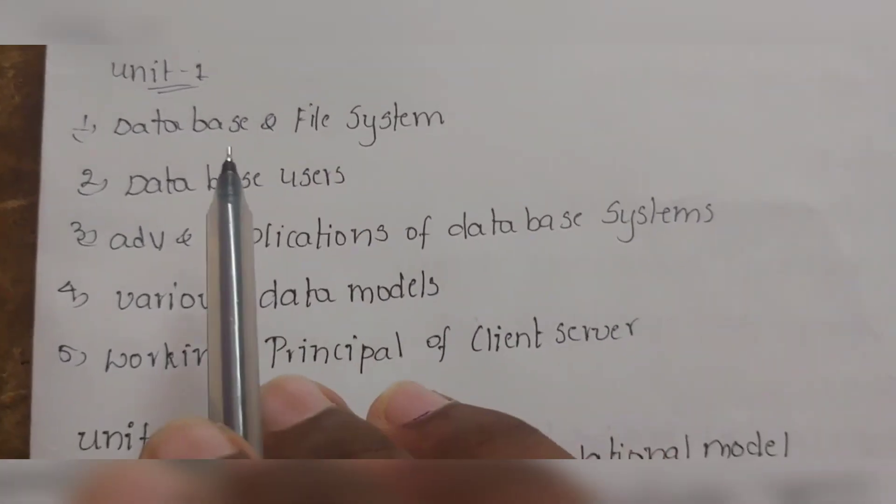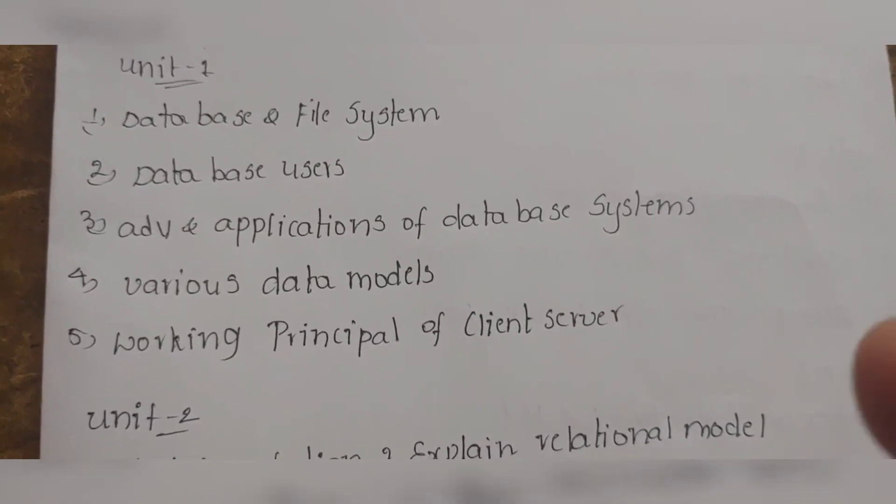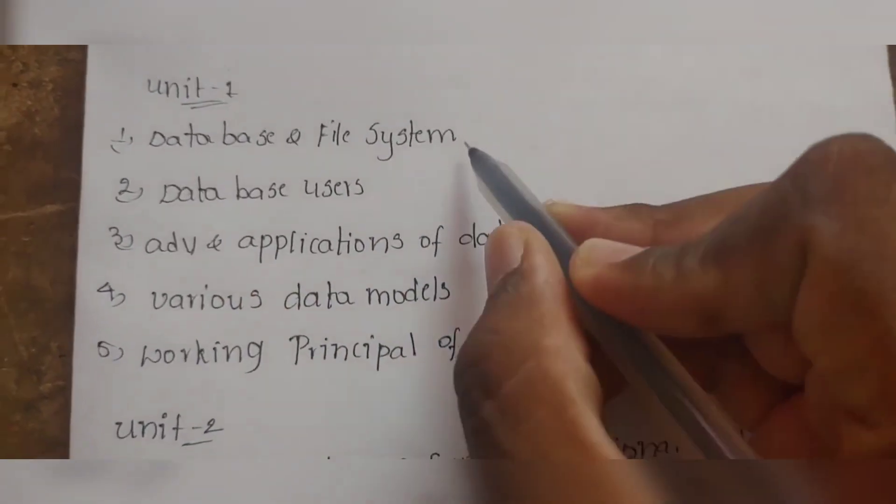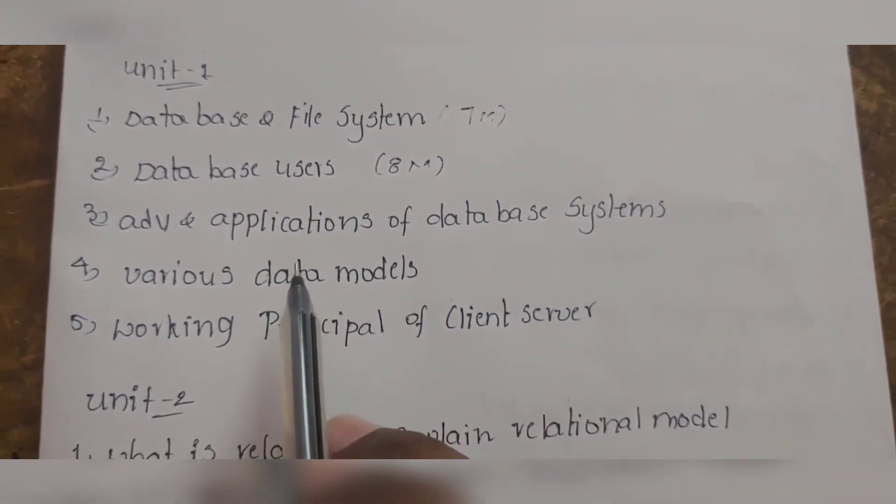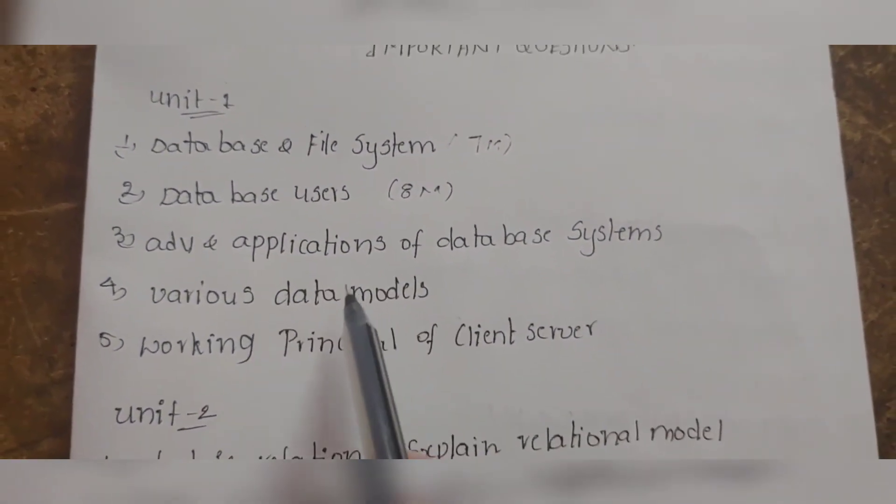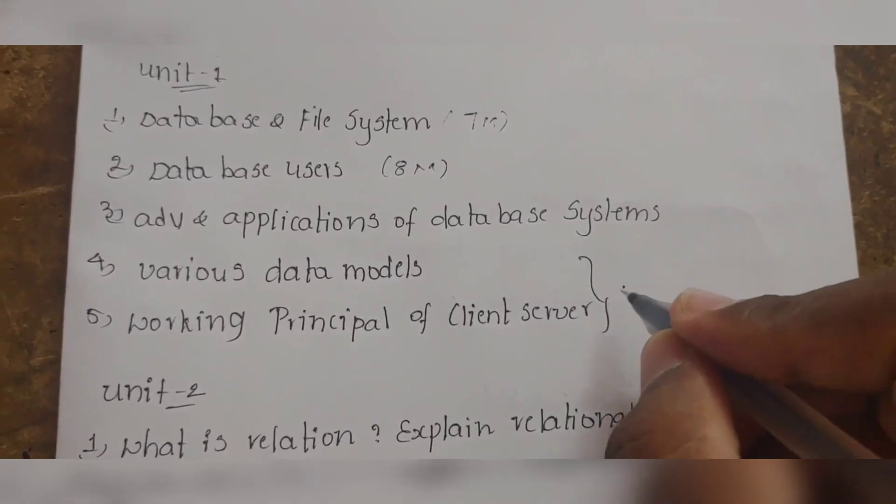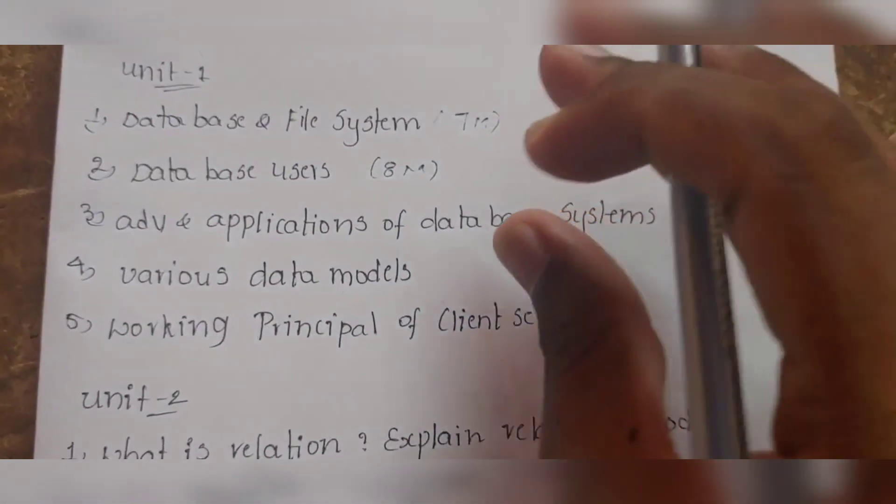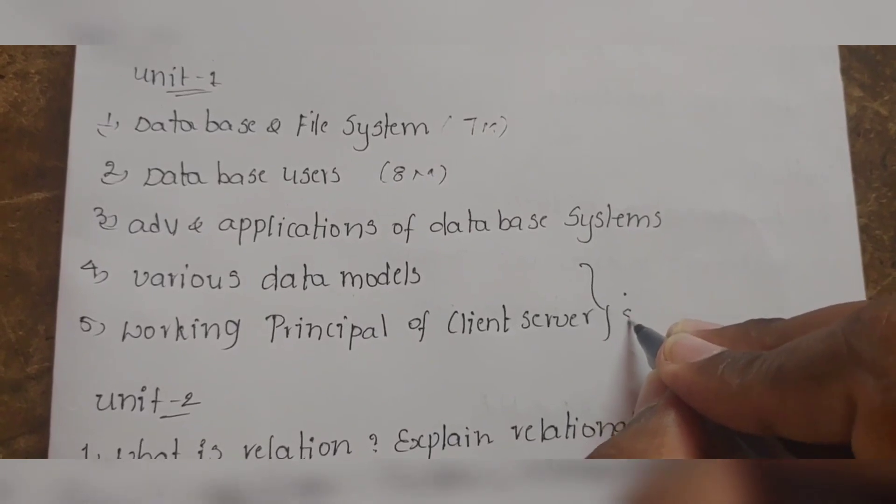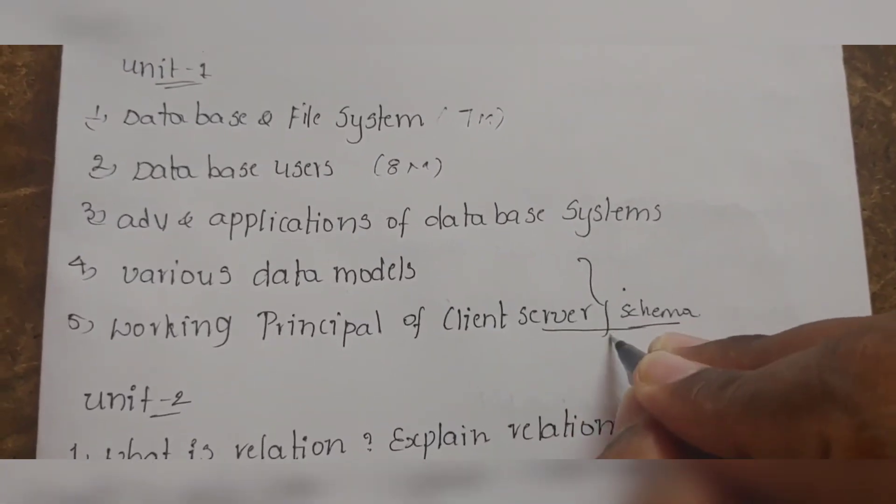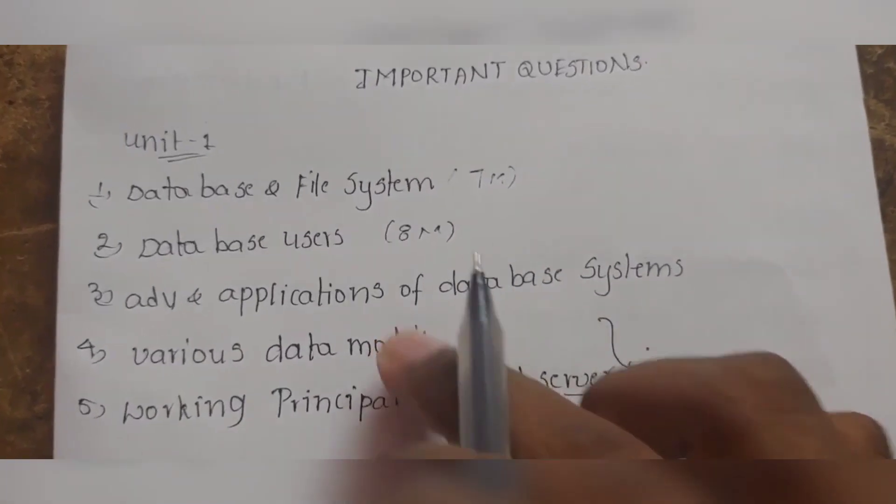Database and file system, you just have to mention the differences for maximum marks. Database users is a short note. Advantages and applications is also important. Various data models gets 8 marks, and working principle of client server is also important.